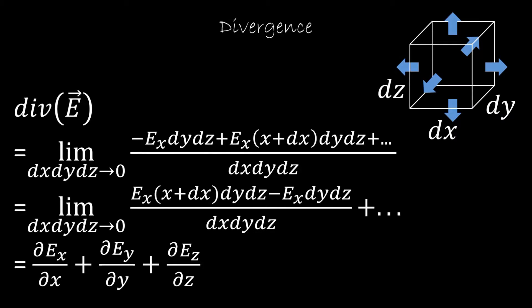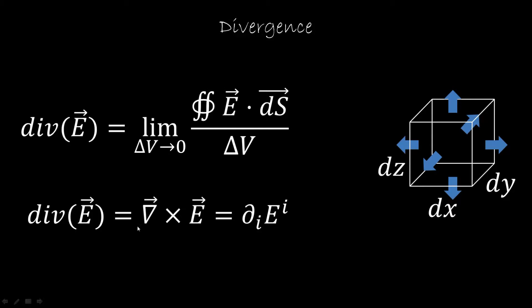Let's try and calculate the divergence. Here is our rectangular box of sides dx, dy, and dz, which in general are not going to be the same. We're only going to explicitly calculate the contribution along the x direction. On one side, we're going to have minus the x component of the field times the area, which is going to be dy times dz. On the other side, we have the x component of the field at x plus dx times dy and dz. Rearranging, the dy dz cancels out and what we're left with is the partial derivative of the x component along the x direction. Doing that for all directions, we end up with the known result that the divergence of E is the scalar product between the nabla operator and the vector field.